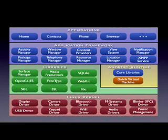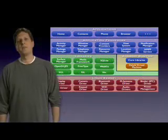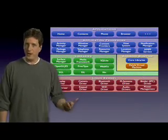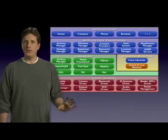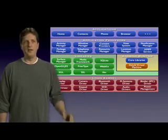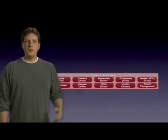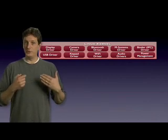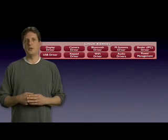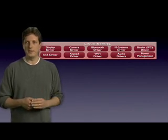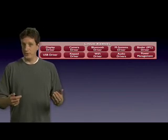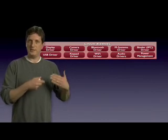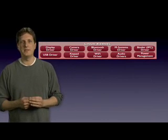If we're going to talk about architecture, we need to start with a diagram covered with a lot of little boxes, and this is ours. Our architecture, we're going to start at the bottom and work up. Our architecture is based on the Linux 2.6 kernel. We use the Linux kernel as our hardware abstraction layer. So if you are an OEM trying to bring up Android on a new device, the first thing you do is bring up Linux and get all your drivers in place.